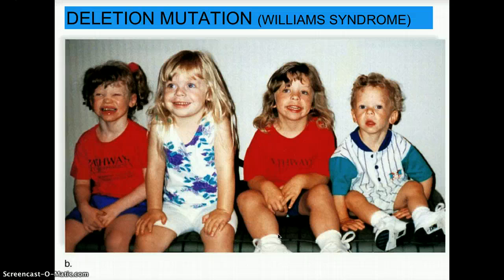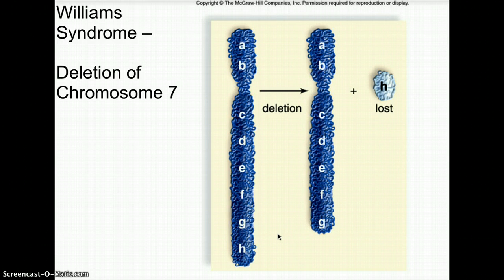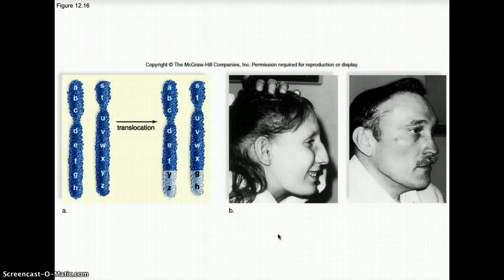A key deletion mutation is Williams syndrome, which occurs when chromosome 7 loses a segment. Looking at children with Williams syndrome, they are unrelated but have the same appearance, health, and behavioral problems — they look like they could be members of the same family. Williams syndrome is that deletion of chromosome 7, where a segment at the end of the chromosome is lost.